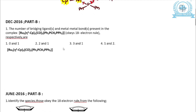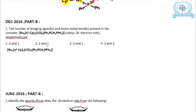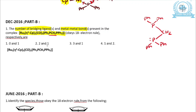Now let us move on to the next question. This is from December 2016 Part B. They are asking for the number of bridging ligands and the metal-metal bonds of this complex. Before studying the complex, let us give a look at this ligand. This is very easy — let us calculate how many electrons this ligand donates.